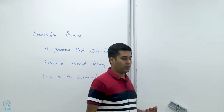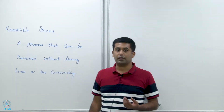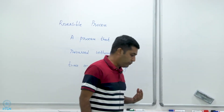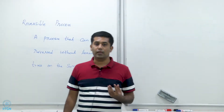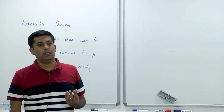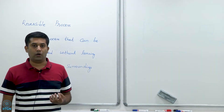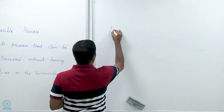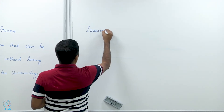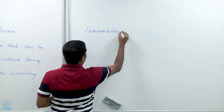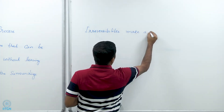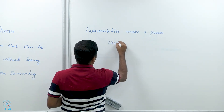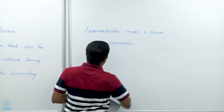An irreversible process is simply a process that is not reversible — it is a negative definition. So why does a process become irreversible? Let us look at some of the most common causes of what are called irreversibilities.